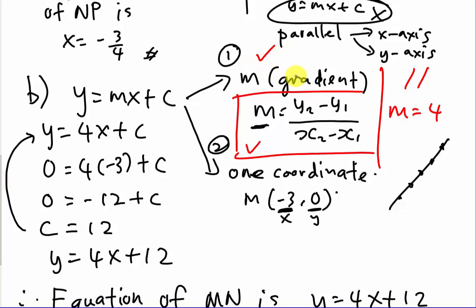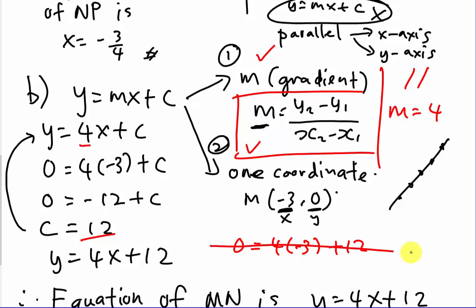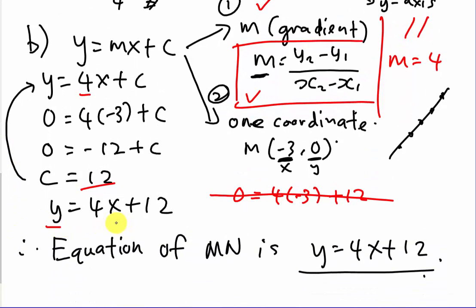Remember: first find the gradient, second find one point on the line, then substitute into y equals mx plus c. A common mistake students make is writing something like 0 equals 4(negative 3) plus 12 as their final answer — that is wrong. An equation must always contain x and y as variables, because the coordinates change along the line.